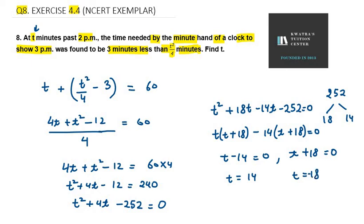Time cannot be negative, so we reject t as minus 18. The value for t is 14 minutes. That's your answer for question number 8 and that's the end of chapter 4. Thank you for watching. Have a great day.